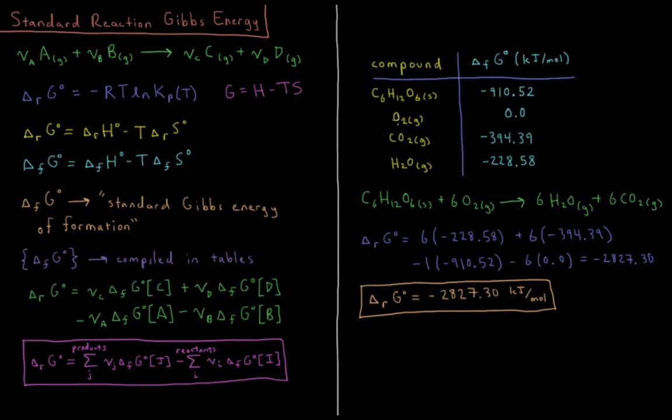Then minus 6 times, and O2 gas is the standard state for oxygen, so that ends up being zero, which gives us a total sum of minus 2827.30 kilojoules per mole for our standard Gibbs energy of reaction for the combustion of glucose.